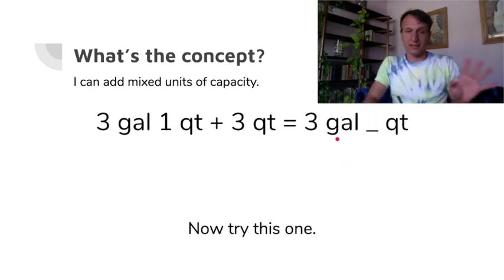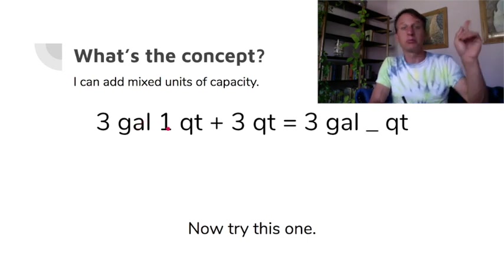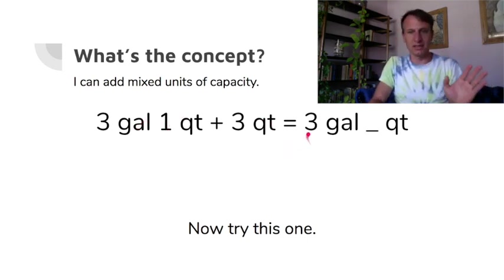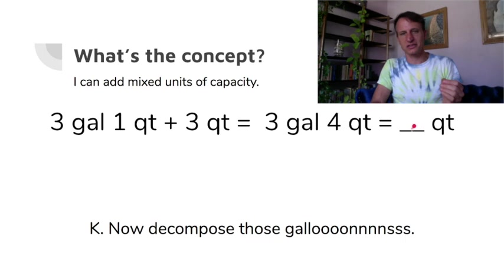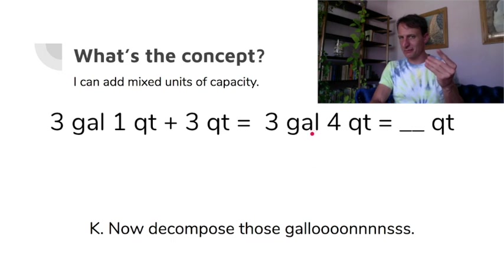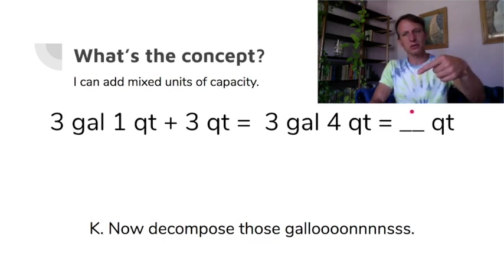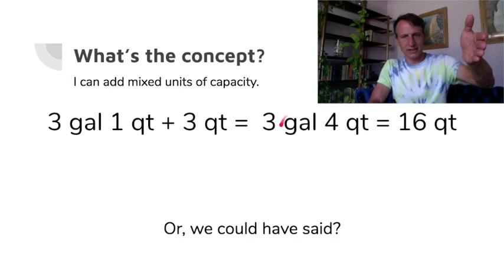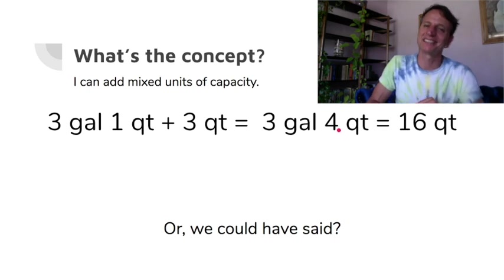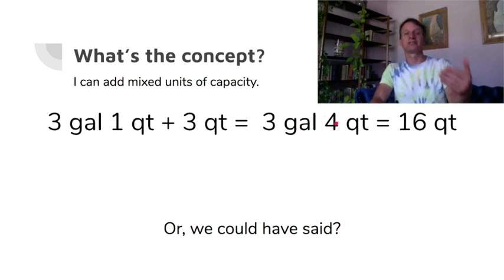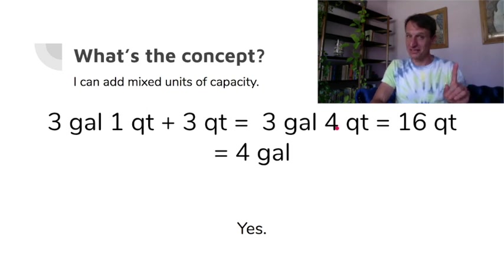Three gallons and one quart plus three quarts: the intermediate step is three gallons and four quarts. Each gallon has four quarts, so three times four is twelve plus four more is sixteen quarts total. But look — three gallons and four quarts: four quarts is a gallon, so this is also equal to four gallons.